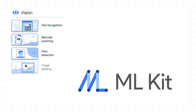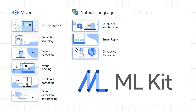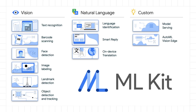Besides TensorFlow Lite, Google also has a product called ML Kit for using machine learning on mobile. It builds on top of TensorFlow Lite and provides a list of pre-trained models through APIs for popular on-device machine learning use cases. For example, it can recognize text, detect objects, and more via an easy-to-use API that mobile developers can use even without learning complex machine learning concepts.